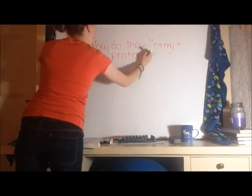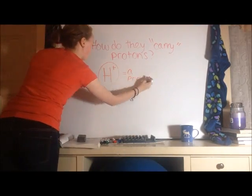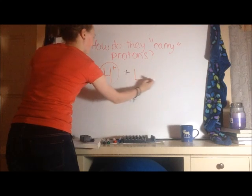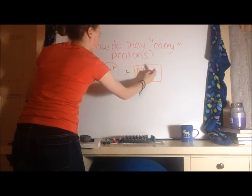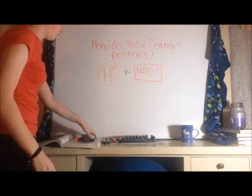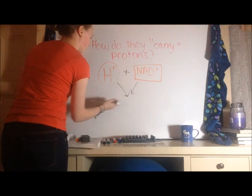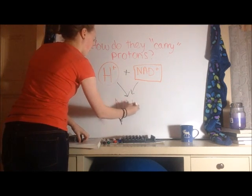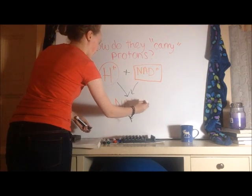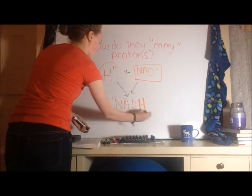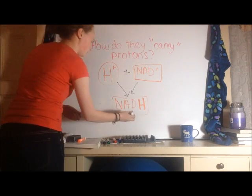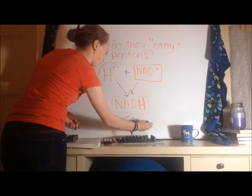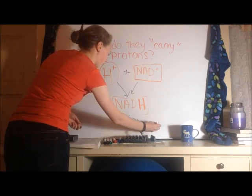Being the good bio students that you are, you're probably wondering: don't NADH and FADH2 need to bring protons to the electron transport chain? Why, yes, yes they do. They do that by bonding with hydrogen protons from glucose, C6H12O6. That H12 is hydrogen protons — hydrogen atoms — which then go into hydrogen ions. They bond and form NADH, which can then be broken down again into NAD+ and hydrogen.